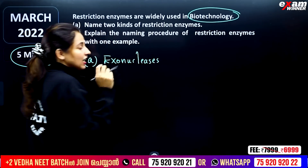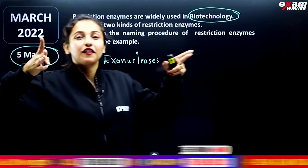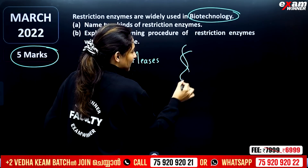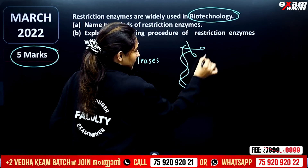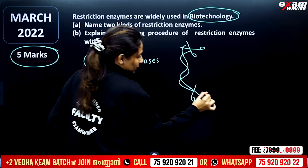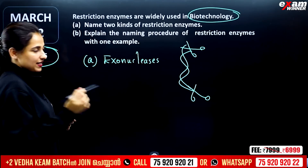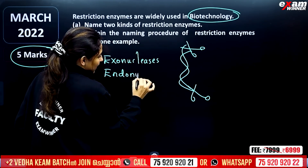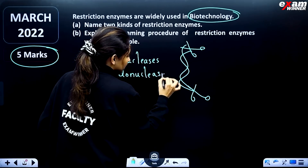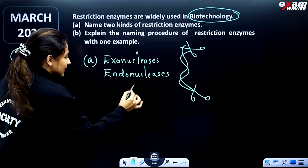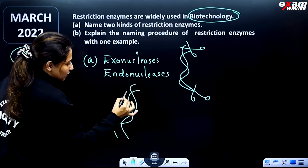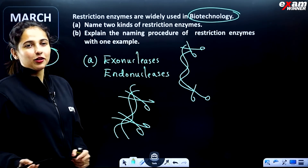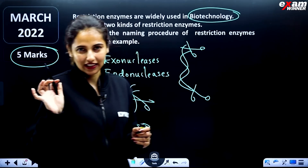Exonucleases remove nucleotides from the ends of DNA fragments. If we have DNA fragments and need to cut them, we use exonucleases. The other category is endonucleases — these cut within the DNA strand. So the two types are exonucleases and endonucleases.